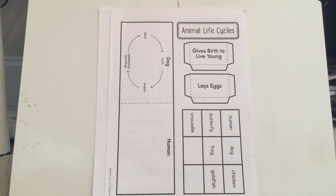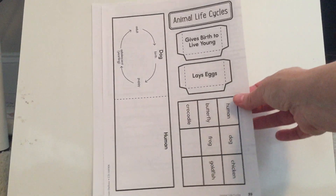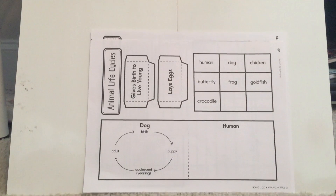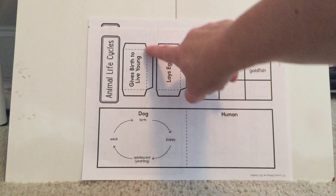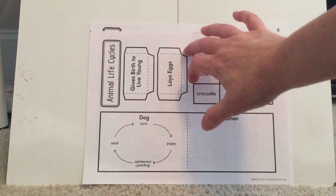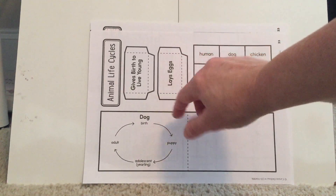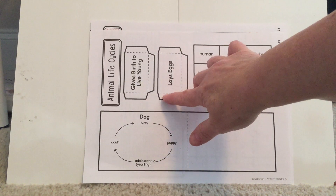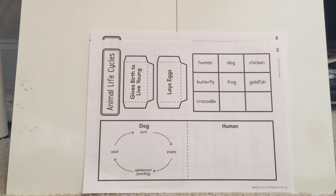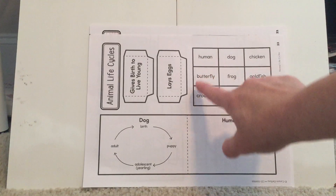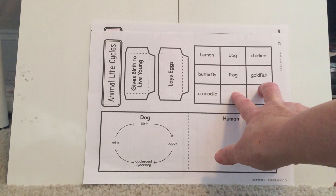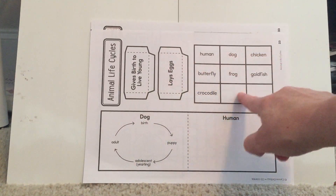So this is your assignment that goes in your interactive notebook — it is animal life cycles. These are pockets, like we've done before. You will cut them out, fold them backwards, and that part gets glued into your interactive notebook.